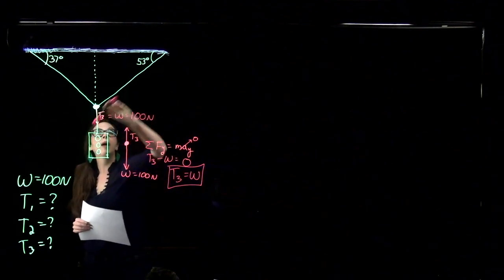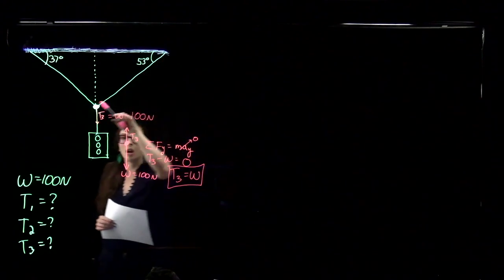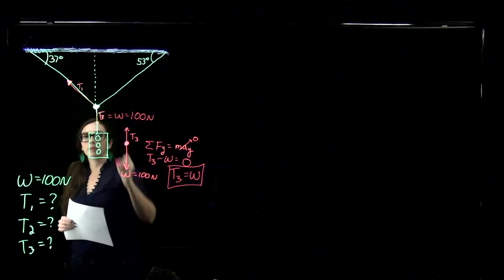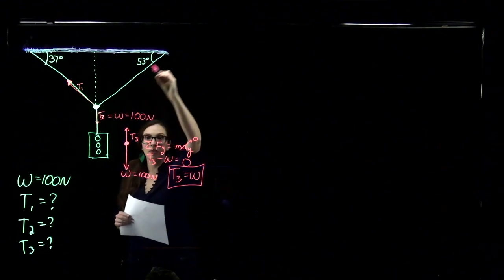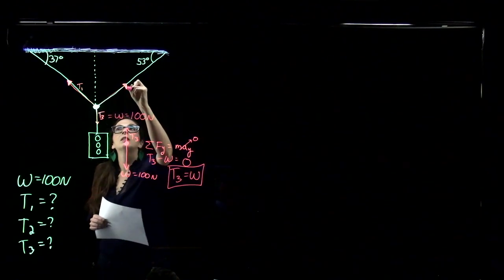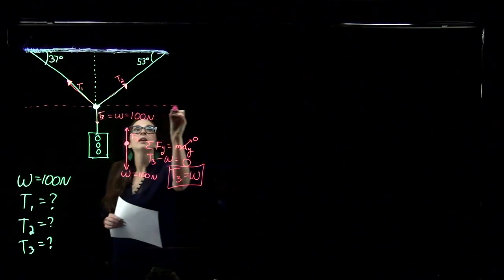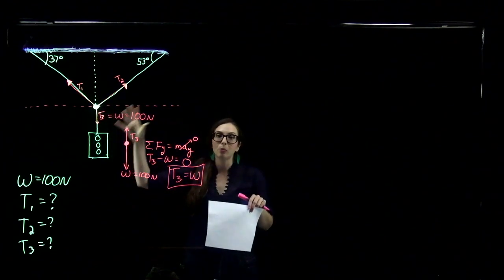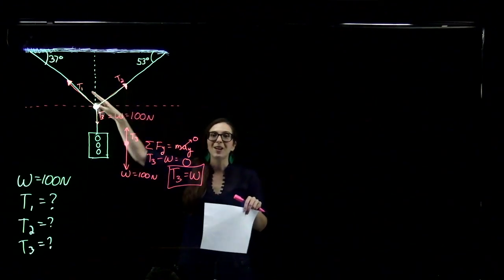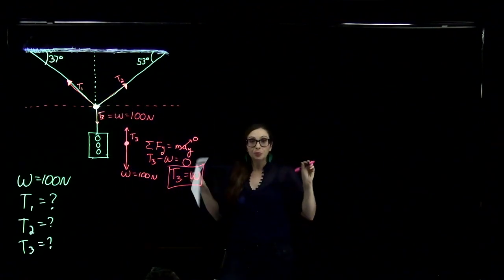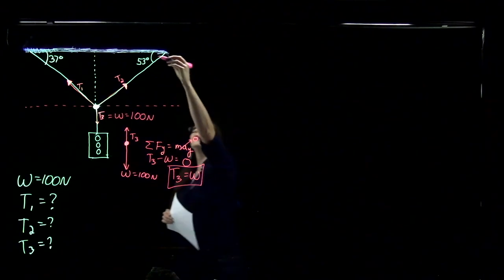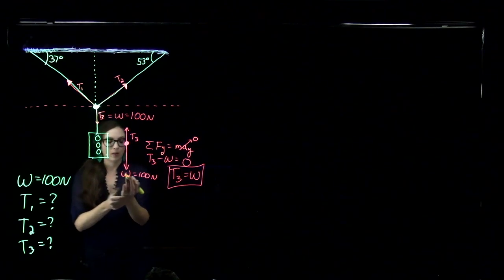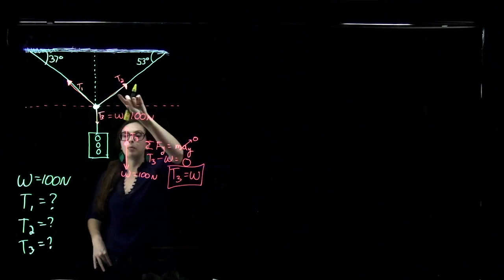Then if I think about my other two forces, these are tension forces: T1 and T2. So we've got T1, T2, and T3 all pulling outward from the knot. Before we can continue, I want to talk about the angles. We know this angle is 53 degrees and this angle is 37 degrees. I drew in a pink dotted parallel line, and the cable intersects both parallel lines. From geometry, these are alternating interior angles, and alternating interior angles are congruent. So this angle down here is also 53 degrees, and this angle is also 37 degrees.